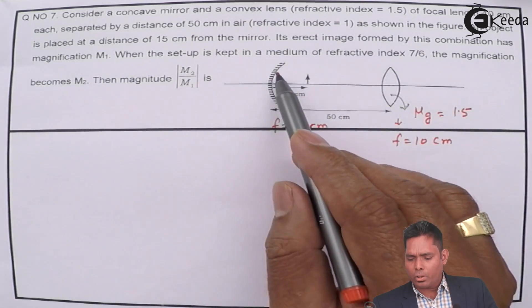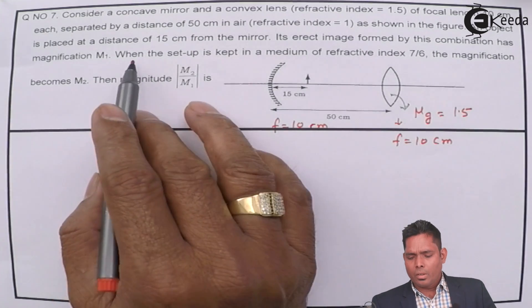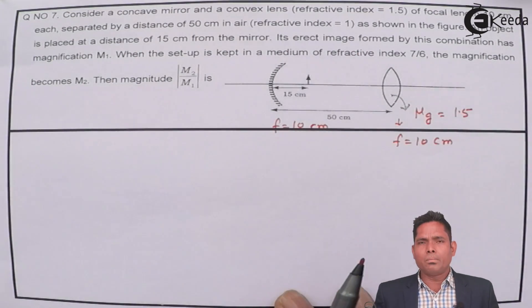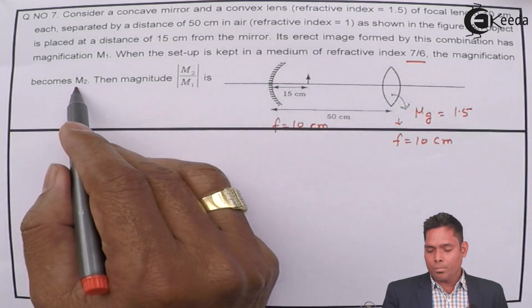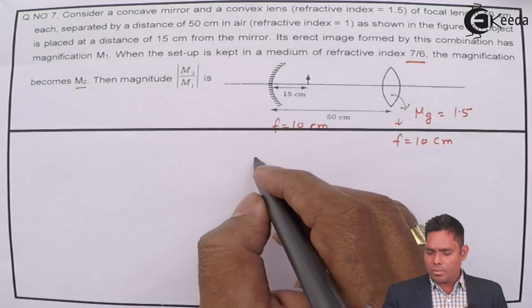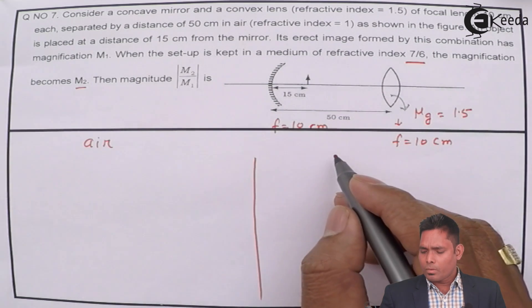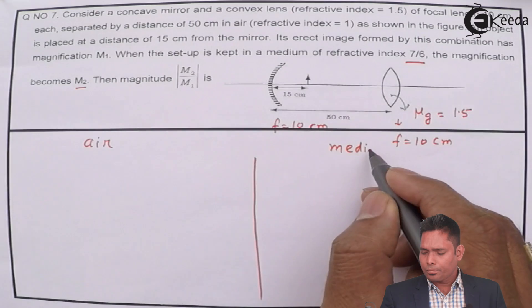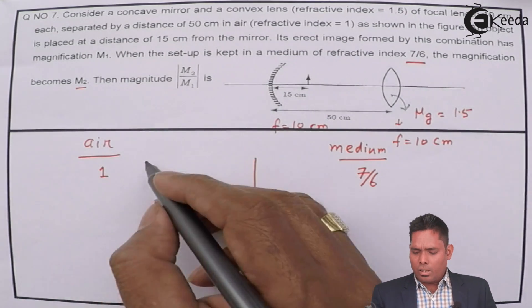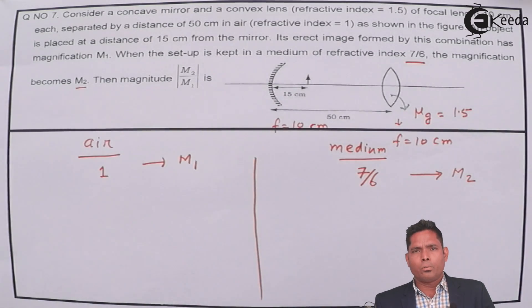It says the erect image formed by this combination has magnification M1. So the final image in the first case is M1. When the setup is immersed in a medium of refractive index 7/6, the magnification becomes M2. So what is the value of the magnitude of M2 over M1?